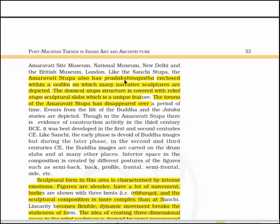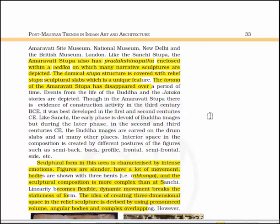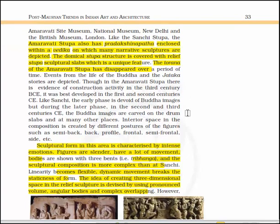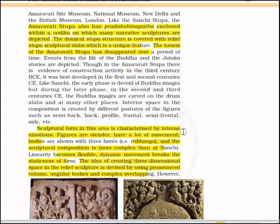Like Sanchi Stupa, the Amaravati Stupa also has a Pradakshinapatha enclosed within a Vedika on which many narrative sculptures are depicted. The domical stupa structure is covered with relief sculptural slabs, which is a unique feature, and the Torana of the Amaravati Stupa has disappeared over time. Events from the life of Buddha and Jataka stories are depicted. Though there is evidence of construction activity in the 3rd century BCE, it was best developed in the 1st and 2nd century CE. Like Sanchi, the early phase is devoid of Buddha images, but during the later phase — 2nd and 3rd century CE — Buddha images are carved on the drum slabs. Interior space is created by different postures of figures such as semi-back, back-profile, frontal, semi-frontal, etc.